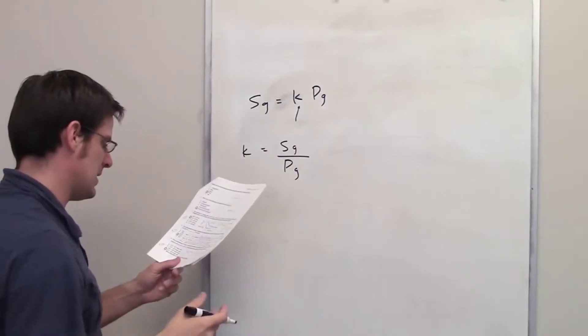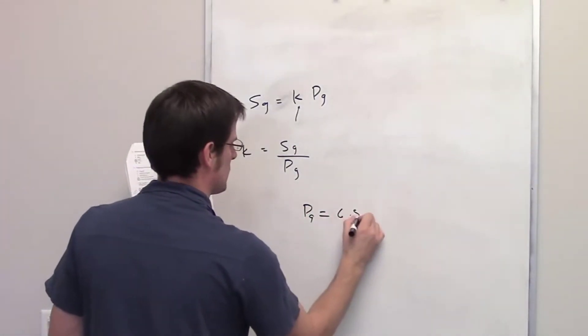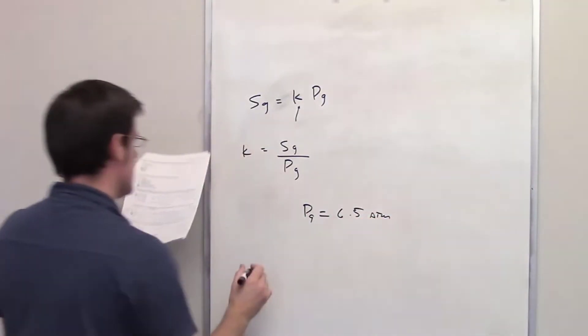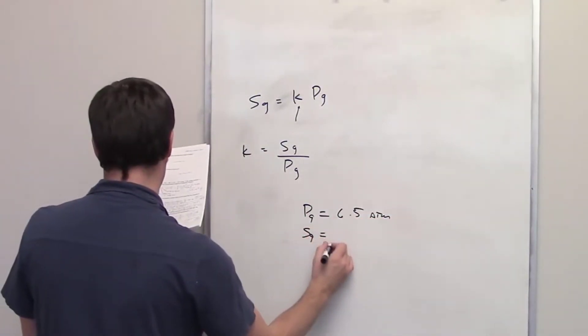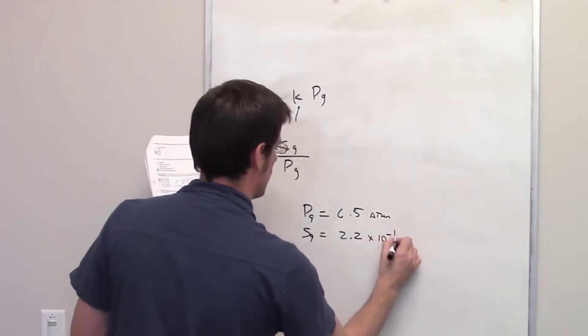We then read the rest of the problem. It tells us that the partial pressure of CO2 in this scenario is 6.5 atmospheres. It tells us that the concentration is 2.2 times 10 to the negative 1 molar.